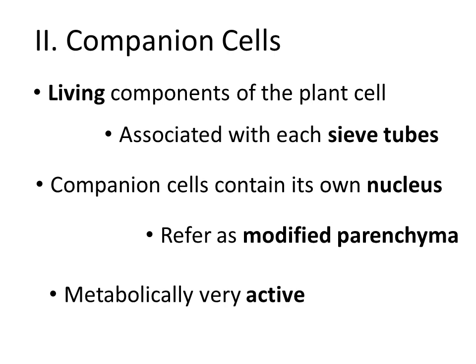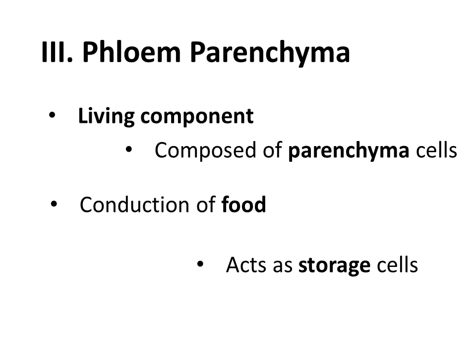Companion cells are modified parenchyma which have dense cytoplasm and cell organelles. They are metabolically very active because they have a nucleus and dense cytoplasm, so all the metabolic activities take place inside the companion cells. They release ATP for the translocation of food and thus help in food conductance.